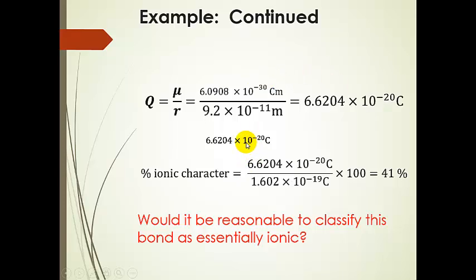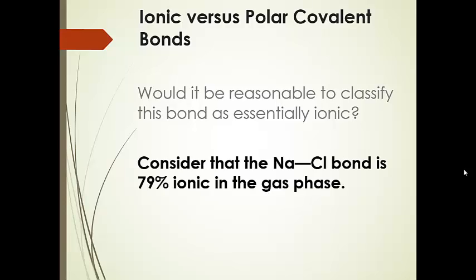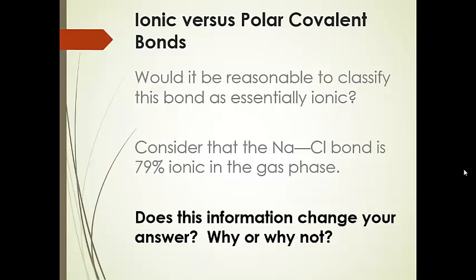Now we take that partial charge and plug it into our percent ionic character formula — dividing it by the charge of a whole electron and multiplying by 100 — and we end up with 41%. So do you think it would be reasonable to classify this bond as essentially ionic? For additional context, the sodium chloride bond in the gas phase is 79% ionic. Did that information change your answer? Would you classify the HF bond as more ionic, more nonpolar covalent, or polar covalent — which is what it actually is.